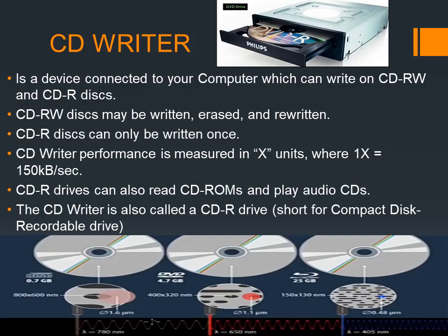CD writer performance is measured in X units, meaning 1X is equal to 150 kilobytes per second — not bits per second but bytes per second. CDR means read; CDROM is for reading and playing audio CDs. CDR drives are a different thing — CDROM is the CD we put in the drive. CD writer is also called a CDR drive, which stands for Compact Disk Recordable drive.